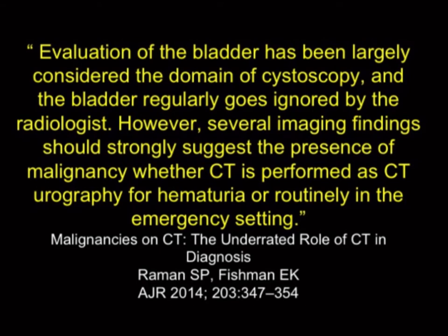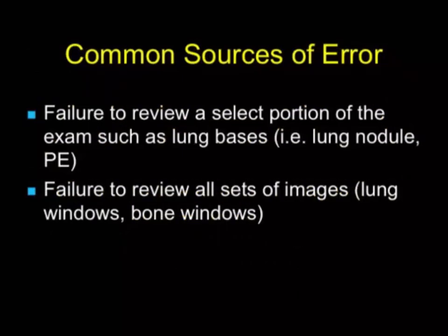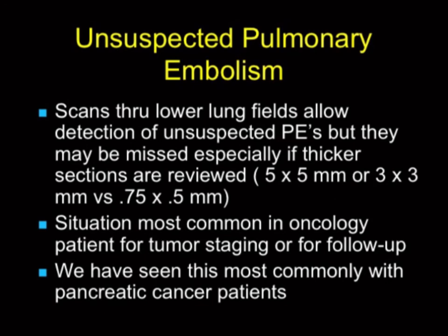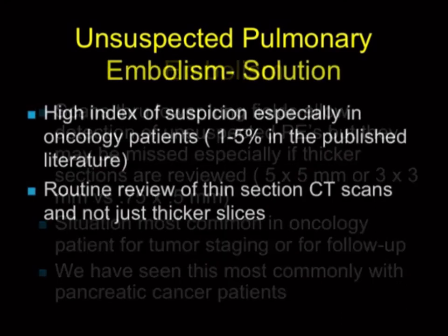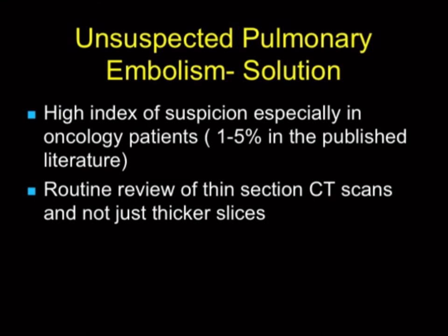One common source of error is failure to review an area with the same tenacity you normally might. When scanning an abdomen for a pancreatic, liver, or renal mass, you may look at the lungs very quickly with thick sections. If you'd looked more carefully or used thin sections, you might have picked up a pulmonary embolism. This happens all the time — in oncology patients, up to 5% have incidental PEs, published in the literature. If you only look at thick sections, you will miss them.